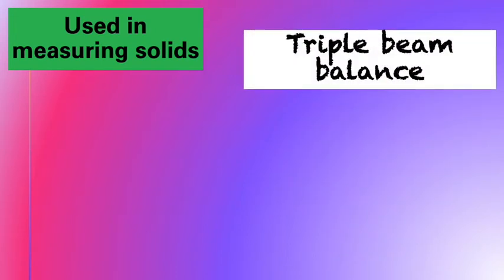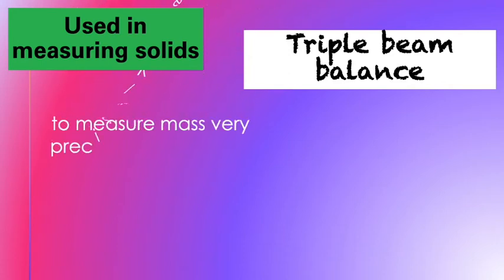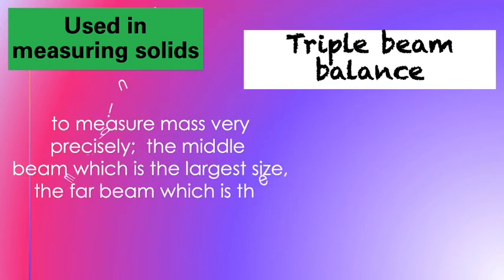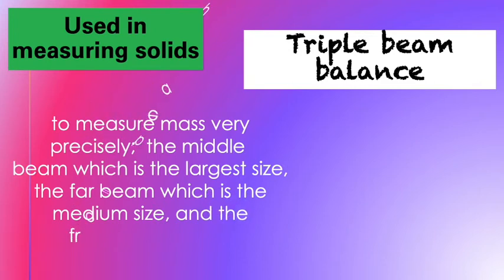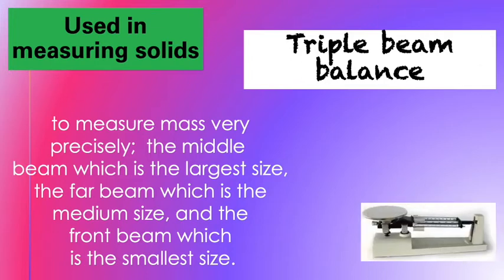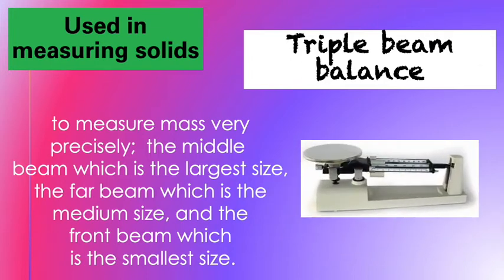The next one is a triple beam balance. This is used to measure mass very precisely. It has the middle beam which is the largest size, the far beam which is the medium size, and the front beam which is the smallest size. Here's a picture of the triple beam balance.